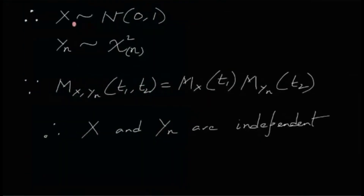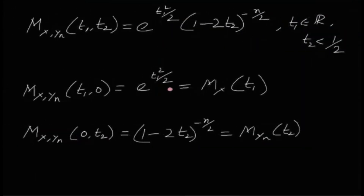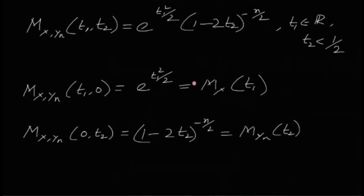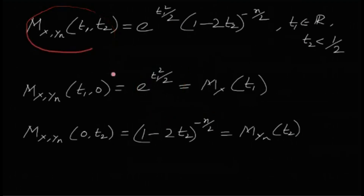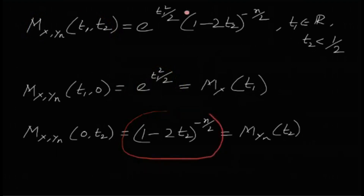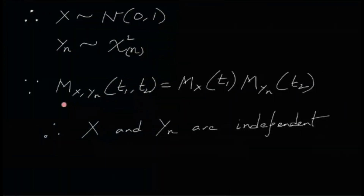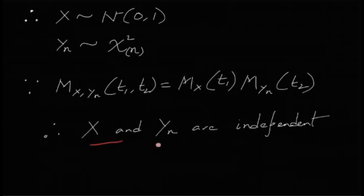So X ~ N(0,1) and Yn ~ χ²(n), meaning Y1 ~ χ²(1), Y2 ~ χ²(2), and so on. Importantly, the joint MGF of X and Yn is actually the product of their individual MGFs, which means X and Yn are independent.